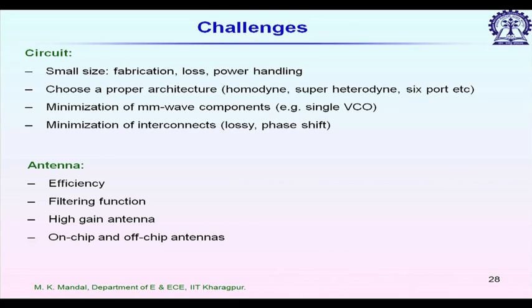A six-port receiver has many passive components, and a super-heterodyne receiver has too many active components and filters — making it unsuitable for handheld devices. For handheld devices, homodyne or zero-IF receivers are preferred. Depending on the application, a proper architecture must be chosen. To minimize cost, it is also preferable to use a single VCO for the whole millimeter wave system.